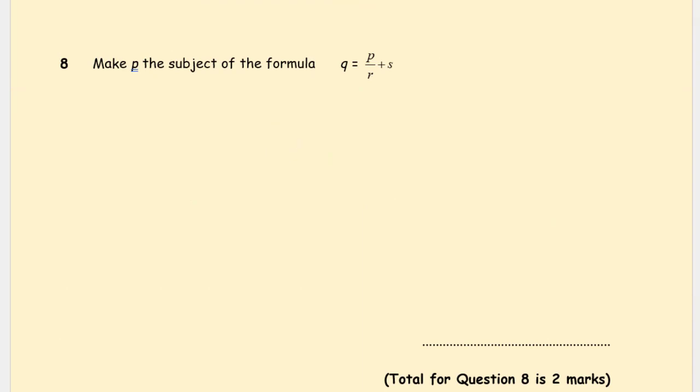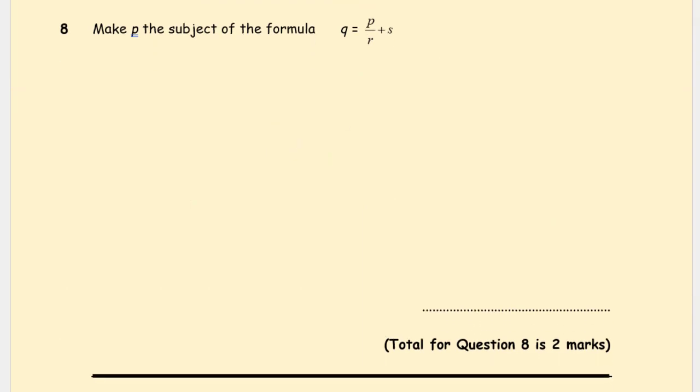Our last and final question: q = p/r + s, make p the subject. Minus s from both sides. You probably realize what you need to do here. q minus s equals p over r. Then multiply by r both sides. You can leave r outside the bracket: r(q minus s) equals p. And we made p the subject. So p = r(q - s), and this is worth two marks.